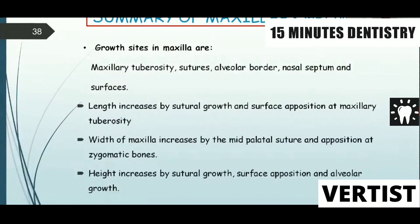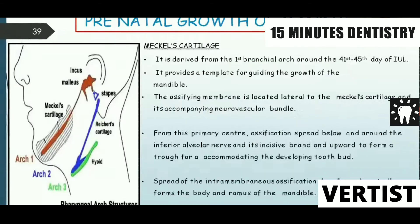This summarizes how the maxilla grows; you can elaborate on it when it comes as a long question. For prenatal growth of the mandible, we start with Meckel's cartilage. It is derived from the first branchial arch around the 41st day of intrauterine life and provides a template for guiding mandibular growth. The ossifying membrane forms lateral to Meckel's cartilage and its neurovascular bundle, and from this primary center, ossification spreads below and around the inferior alveolar nerve in the incisive plane, and upward to form a gutter accommodating the developing tooth buds.